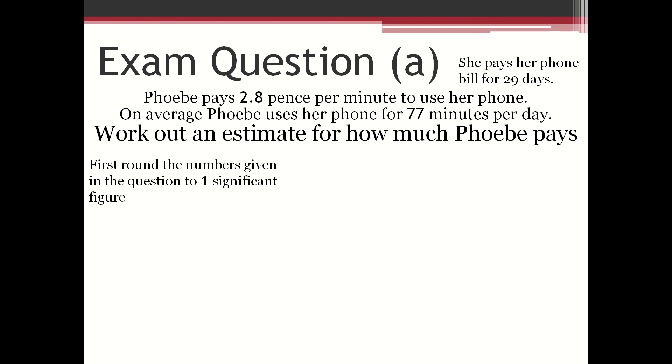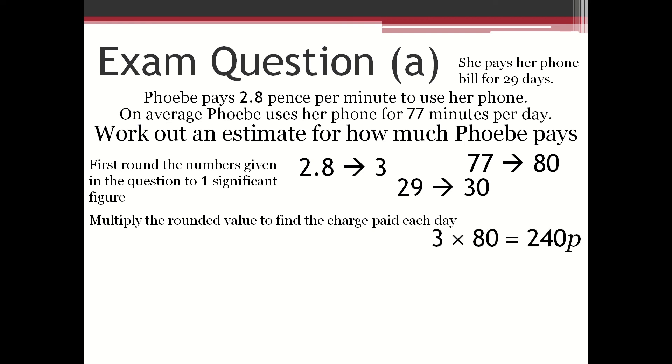First, round the numbers given in the question to one significant figure. So 2.8 to 3, 29 to 30, and 77 to 80. Multiply the rounded values to find the charge paid for each day. So that would be 3 times 80, which is 240 pence a day.